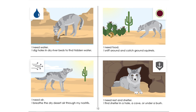The coyote says: I need water — I dig holes in the riverbed to find hidden water. I need food — I sniff around and catch ground squirrels. I need air — I breathe the dry desert air through my nostrils. I need rest and shelter — I find shelter in a hole, a cave, or under a bush.